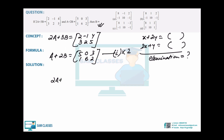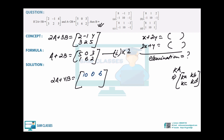I'll multiply the second equation by 2, so I get 2A + 4B = double the matrix: [[10,0],[6,2],[12,4]]. A few students can make mistakes here — whenever you multiply a scalar to a matrix, each and every element is multiplied. I already gave that example in the formula section.